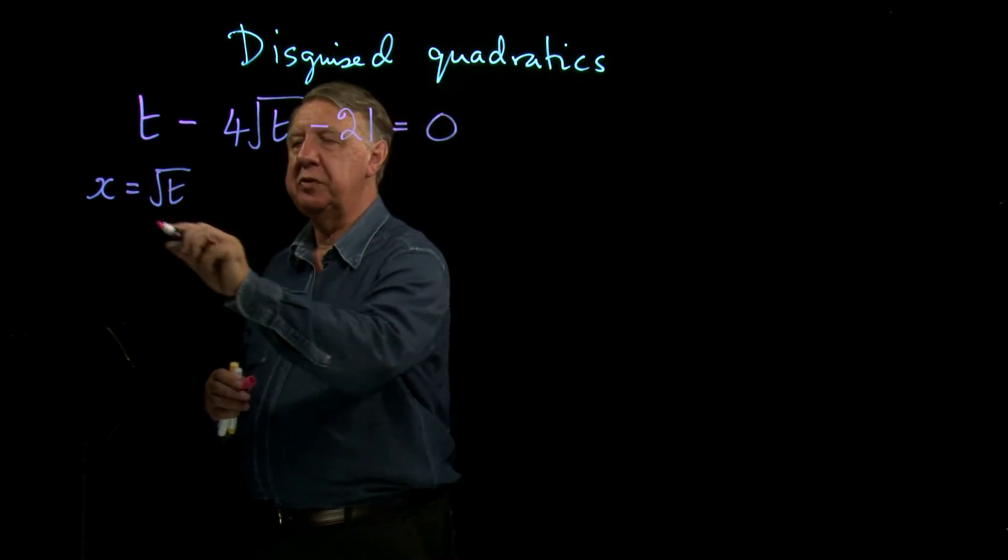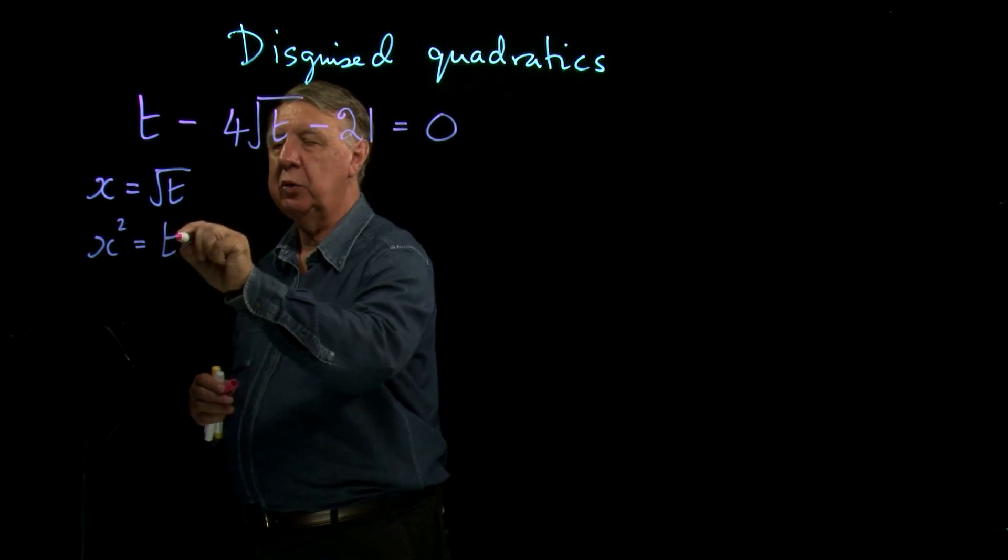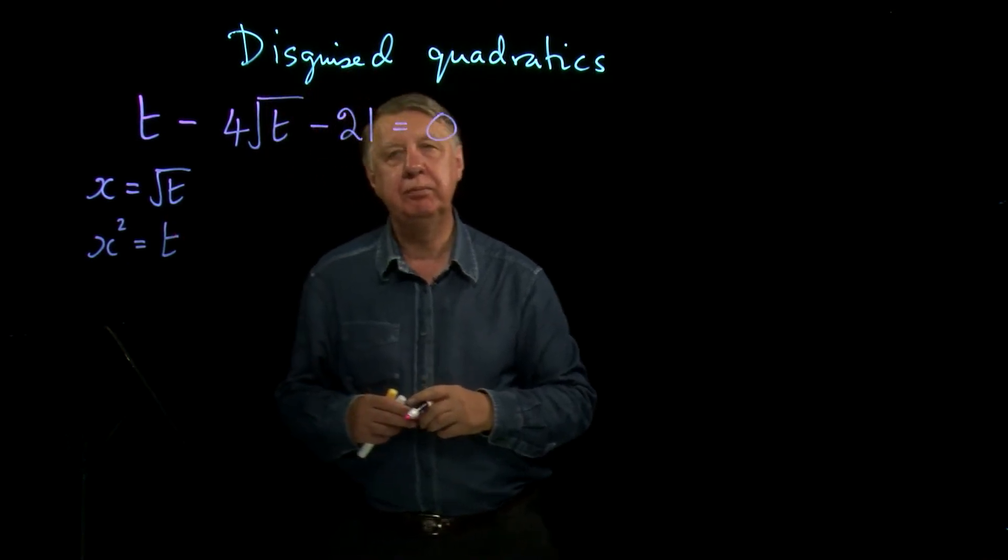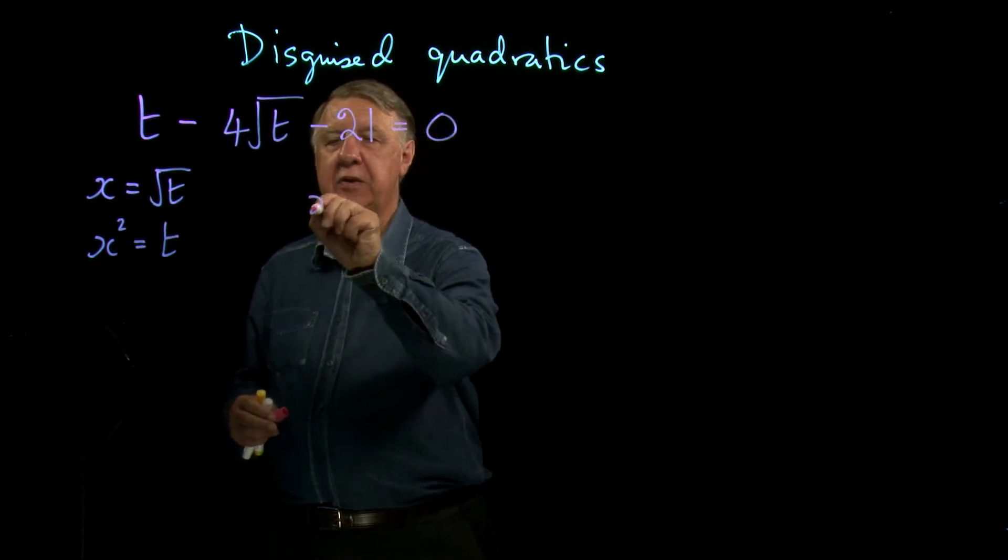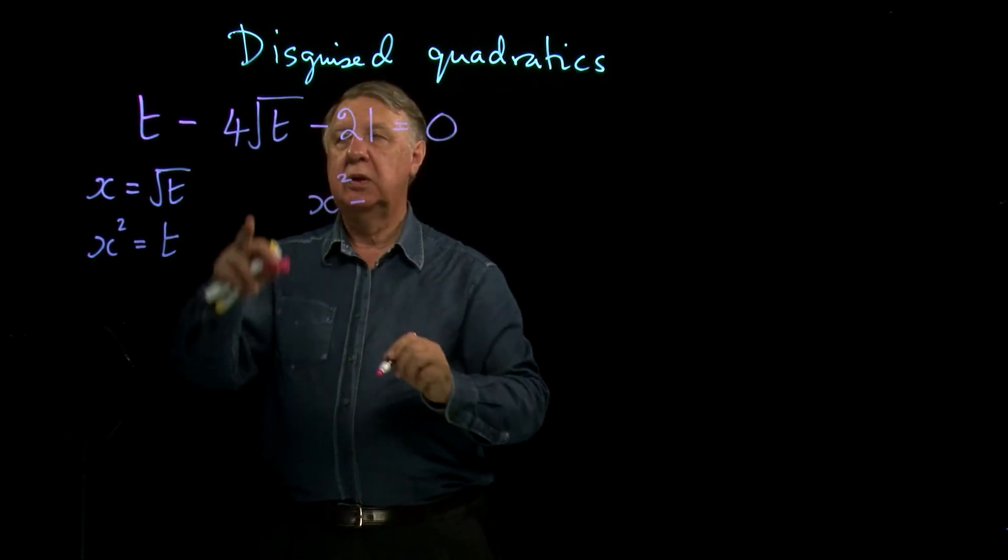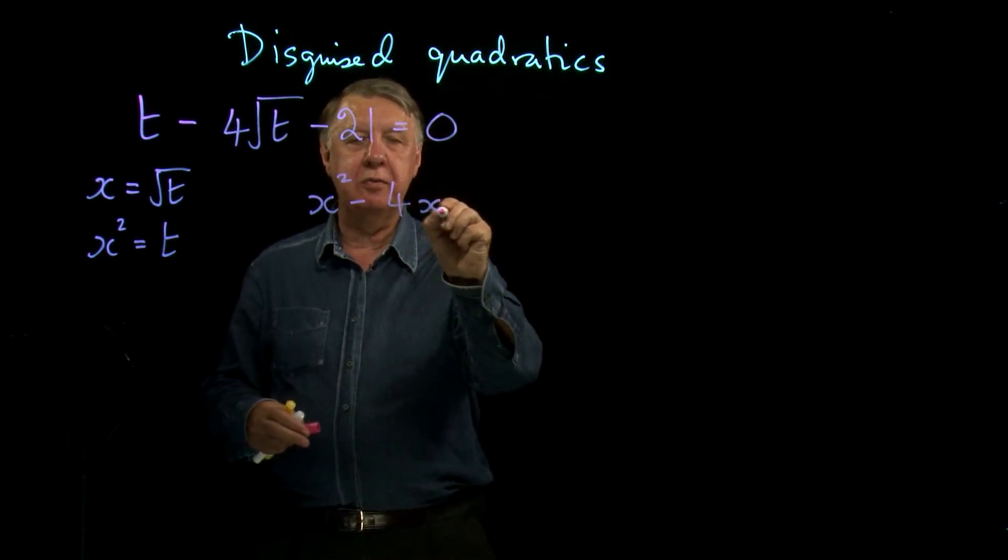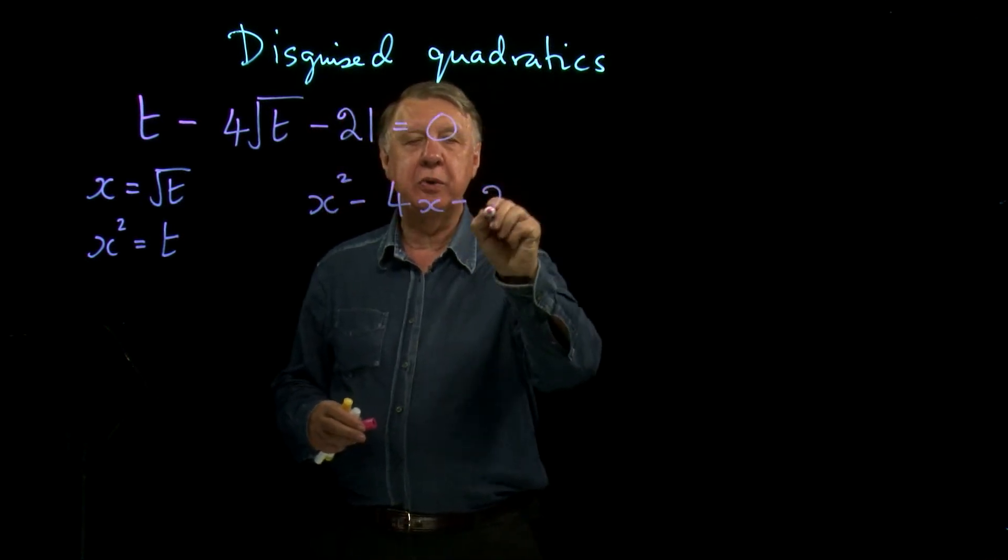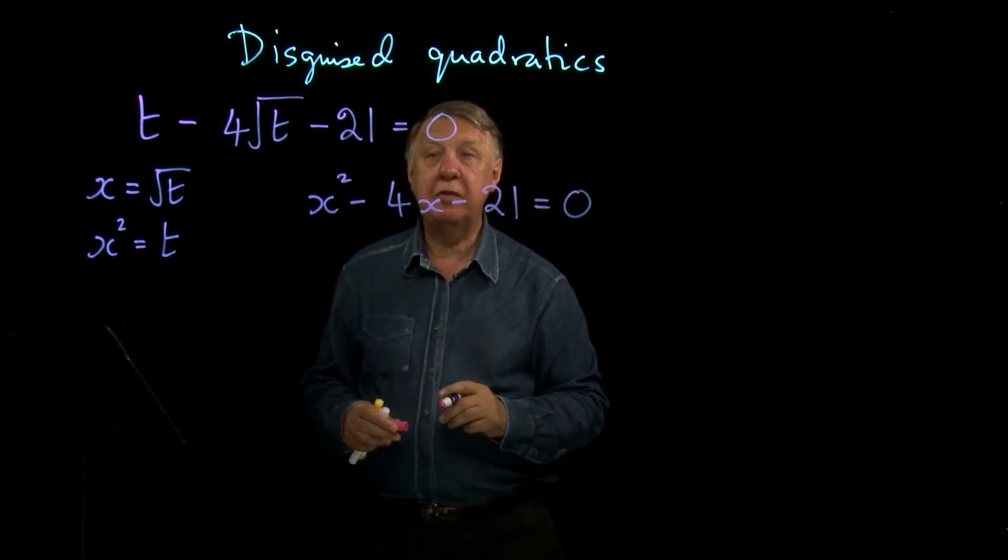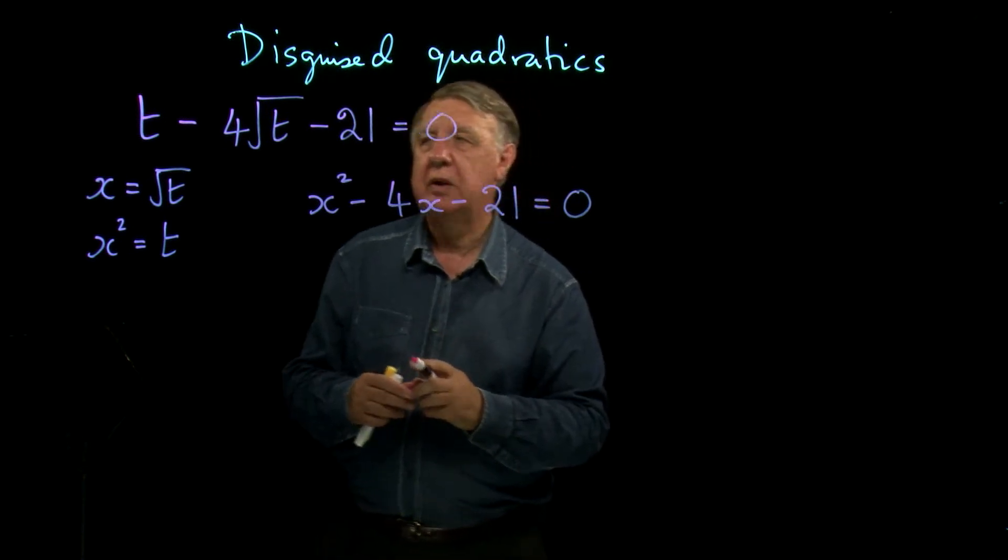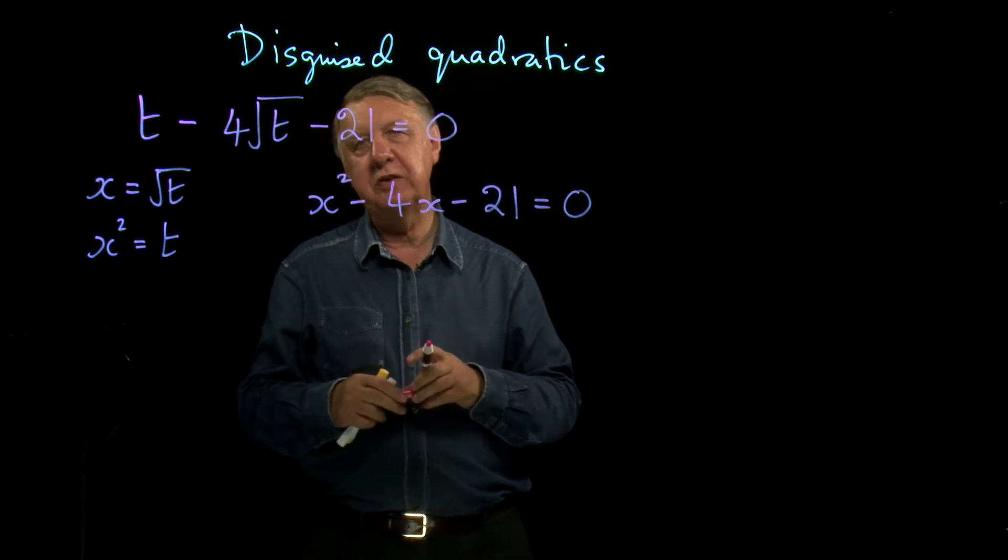Well, if x is the square root of t, then if I square that, x squared is, of course, equal to t. And so, t becomes x squared. Four times the square root of t is 4x. Take away 21 equals 0. And we have a quadratic equation. So, there was a hidden quadratic here, but it wasn't so obvious to see.